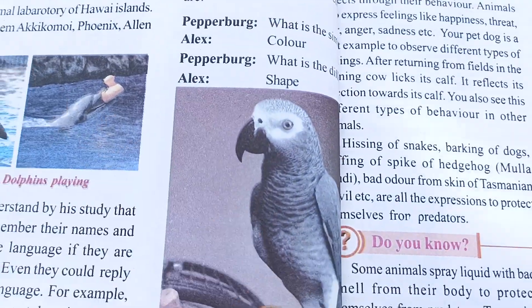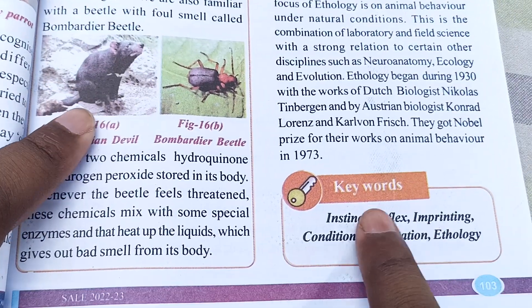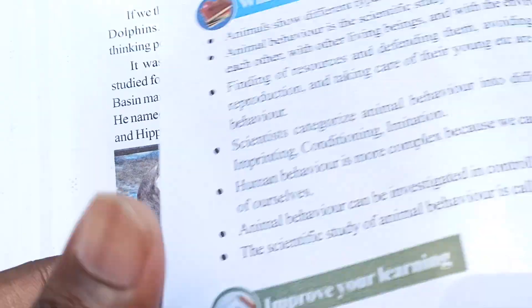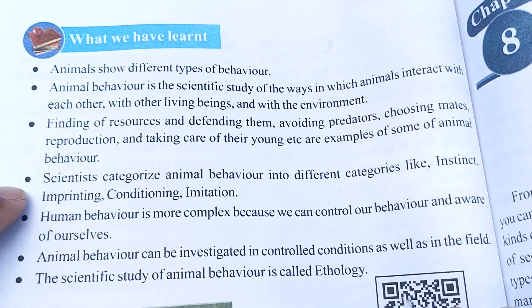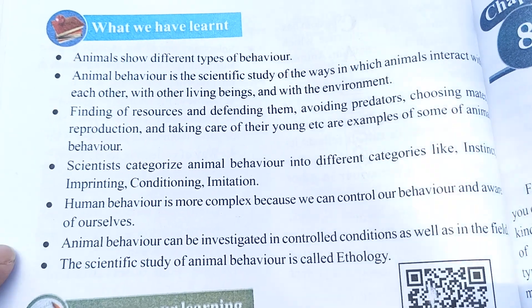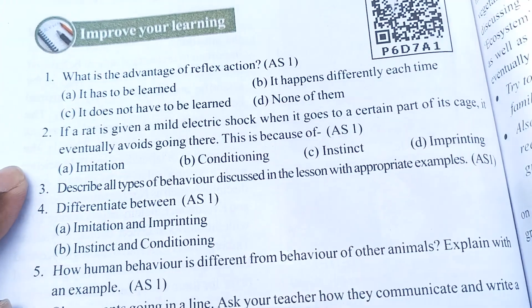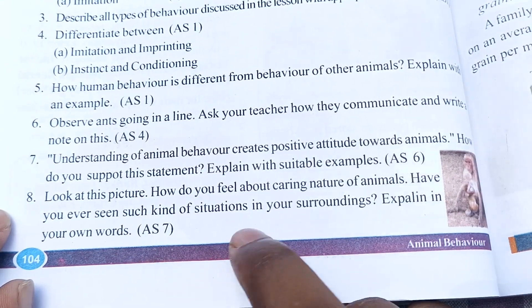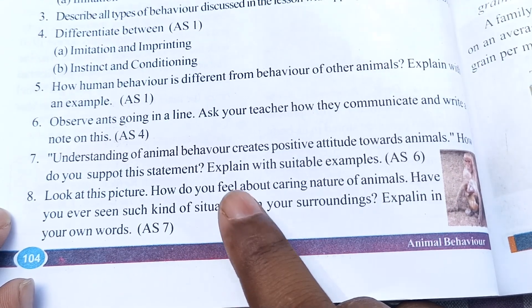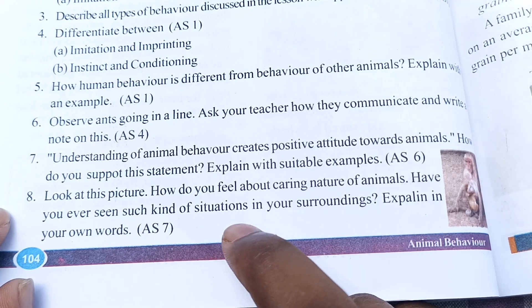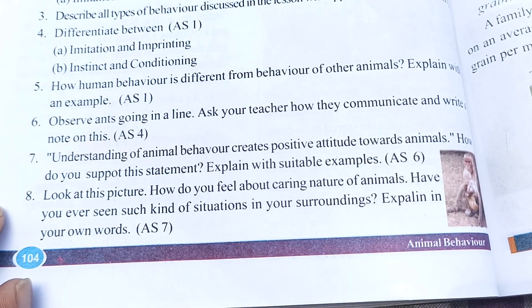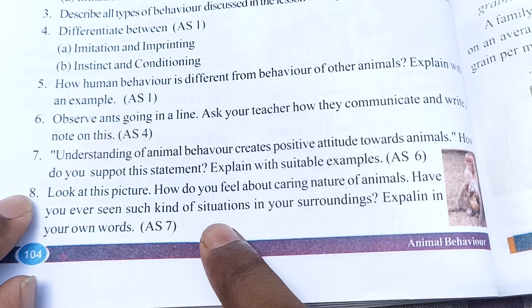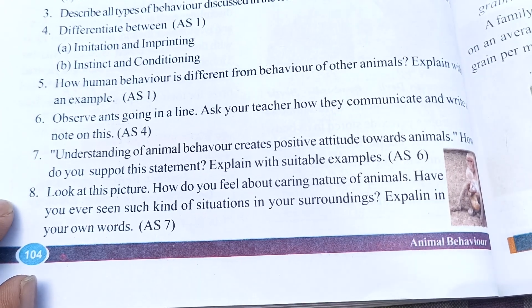So if you come here, you can see at the bottom there are keywords given. We will see the keywords. After that, this is 'What You Have Learned' — I think it's not very important for us. After that, this is 'Improve Your Learning', which means your question and answer. In this section there are up to 8 questions. We will see the question answers and we will also see the activities.